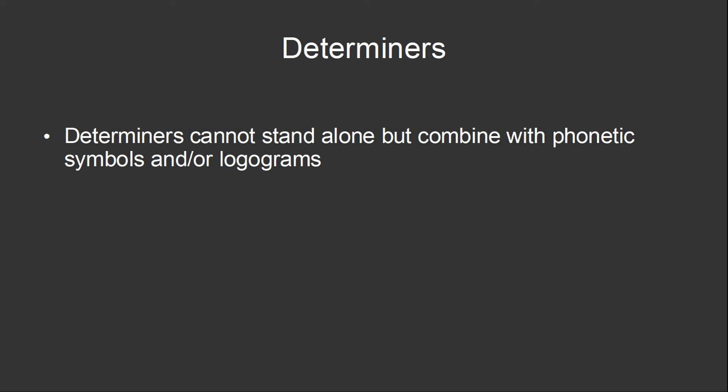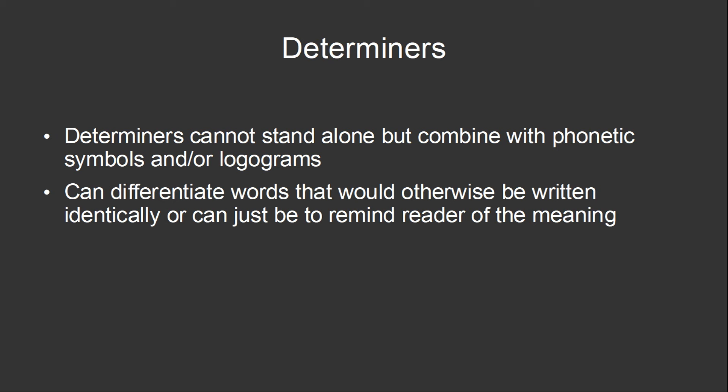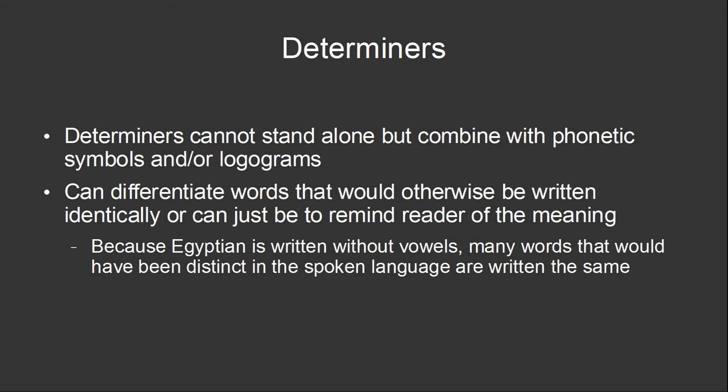The final kind of hieroglyphs are determiners. Determiners can never stand alone, but are combined with logograms and or phonetic symbols. Determiners give hints as to the meaning of the word. In many cases, determiners serve simply to remind the reader of the meaning of a word, but sometimes they can distinguish words that would otherwise be written identically. It's worth noting that because Egyptian was written without vowels, there are many pairs of words that would have been different in speech, but written the same. This makes determiners more useful than they might otherwise be.